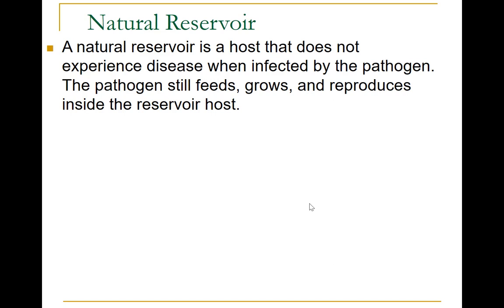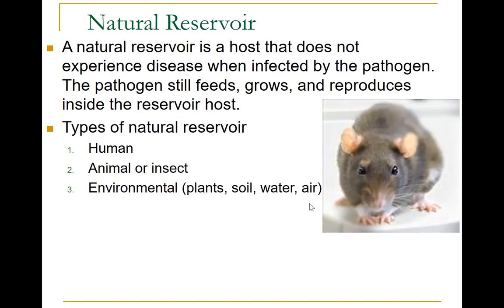There are three main types of natural reservoirs: humans, animals or insects, and environmental. Asymptomatic or healthy human carriers are those who never experience symptoms despite being infected. Human reservoirs or carriers commonly transmit disease because they do not realize they are infected and consequently take no special precautions to prevent transmission.